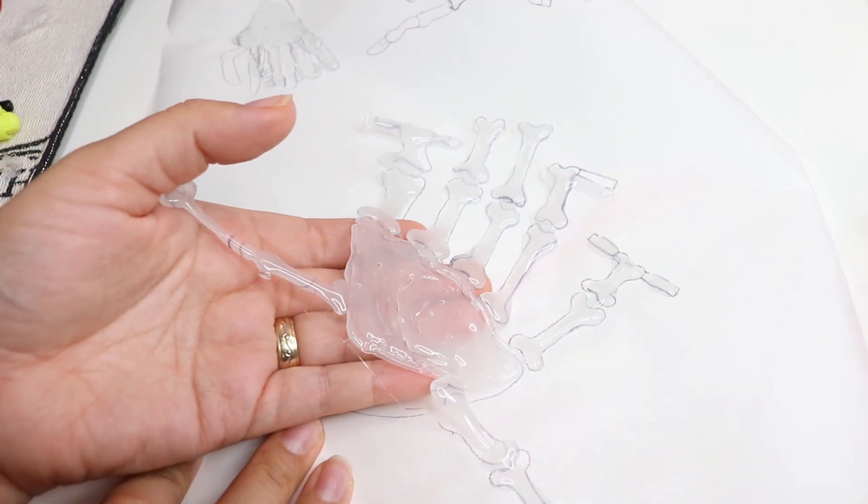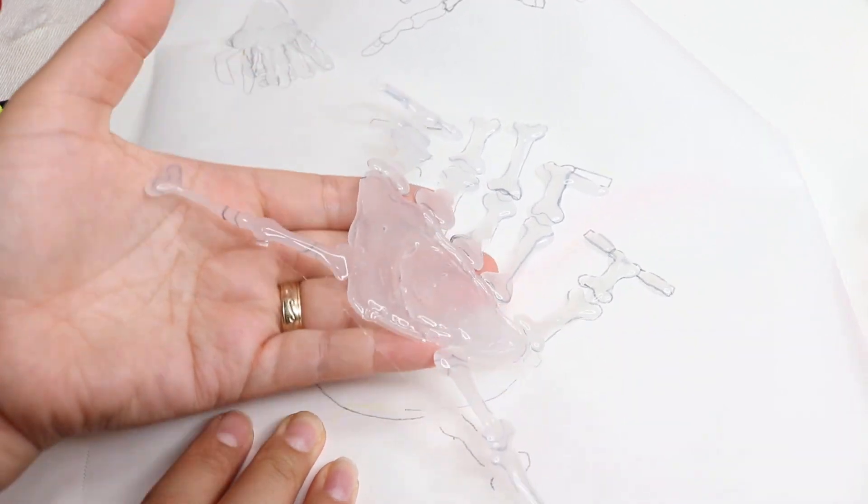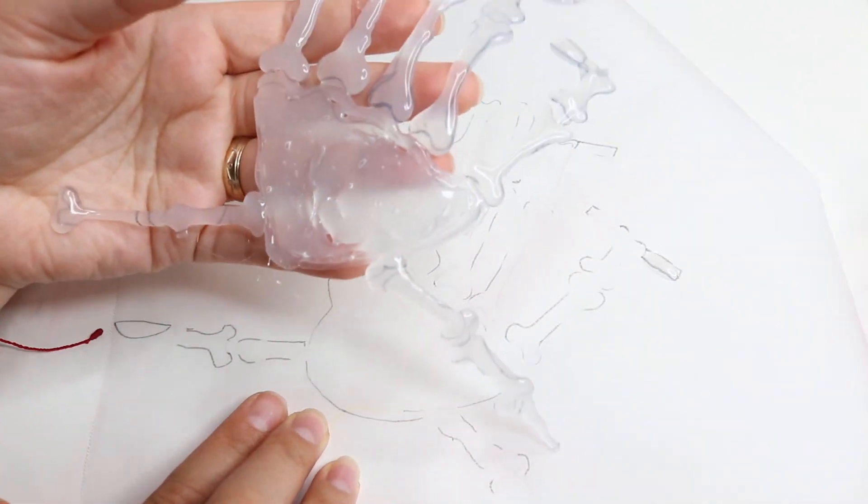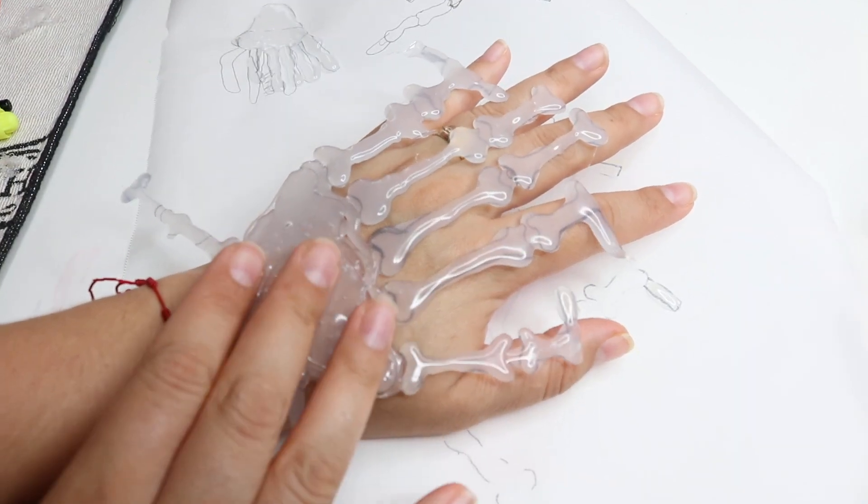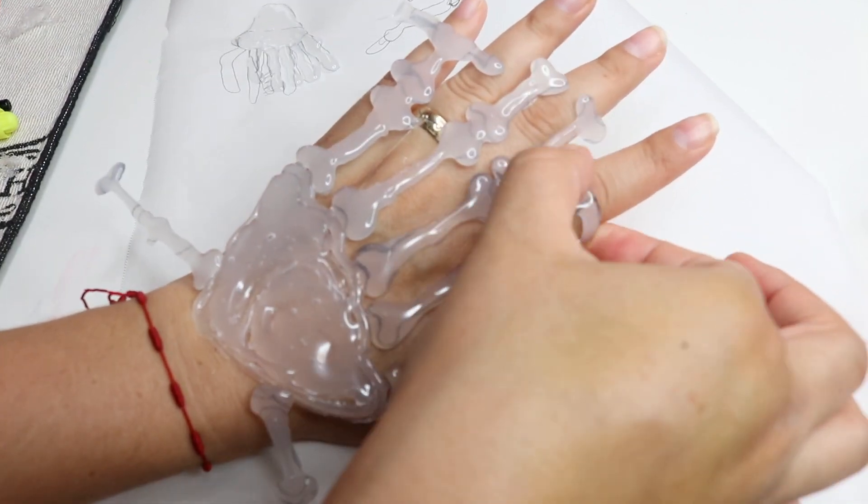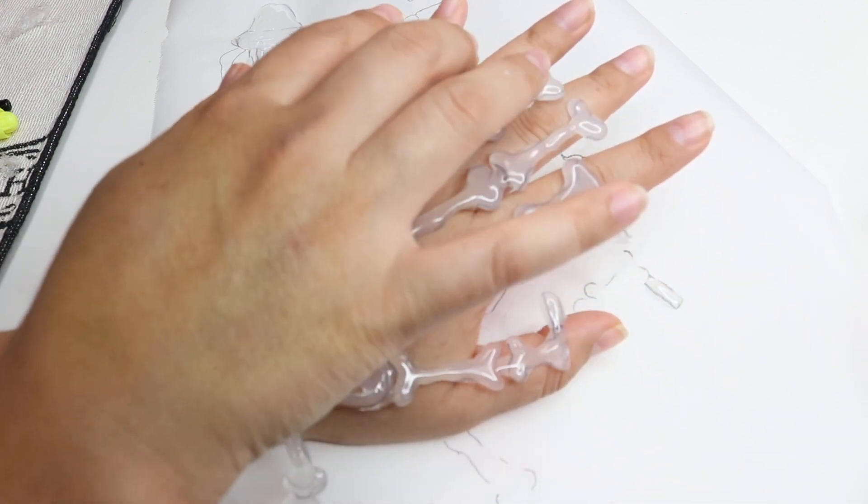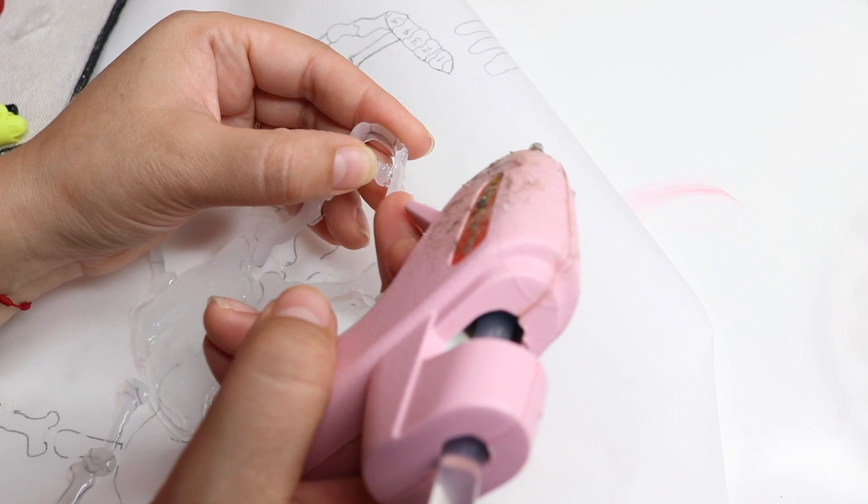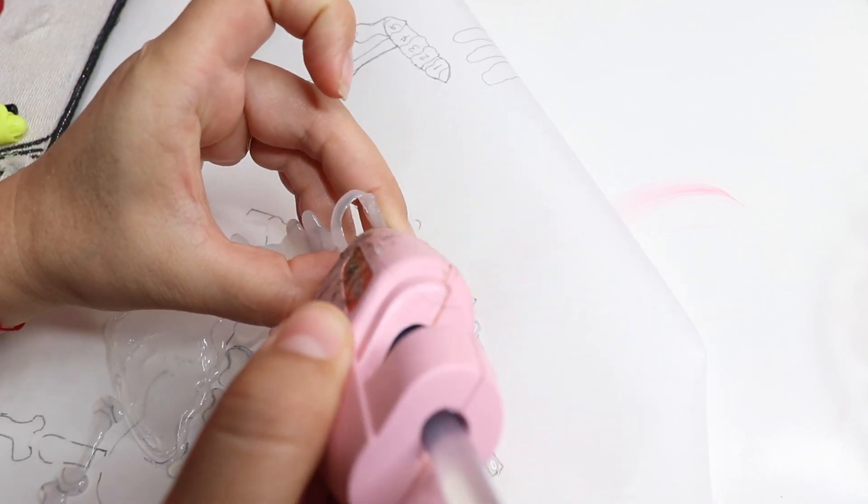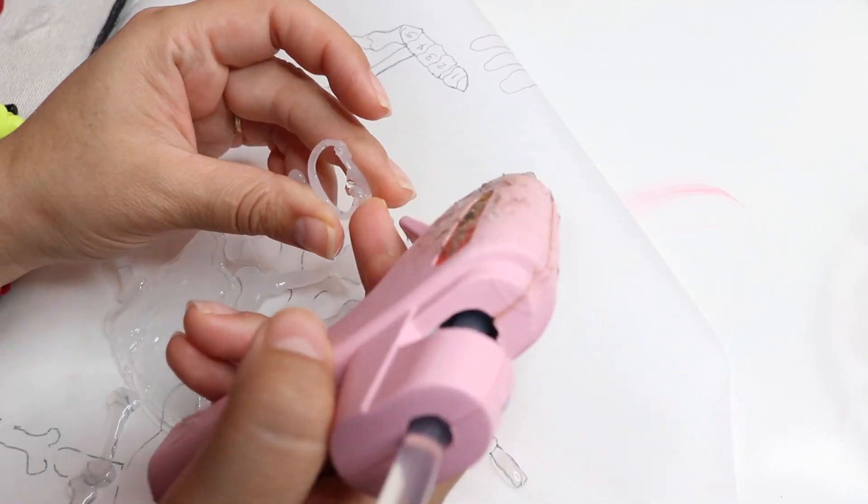Once your hot glue has dried you can paint it with some black acrylic paint or a black nail polish. I left some ends bigger on some of the fingers just so I can wrap it around and create a ring. Once you are done with everything you can add some hot glue gun and then glue it together to make that ring so it can stay in your hand once you put it on.